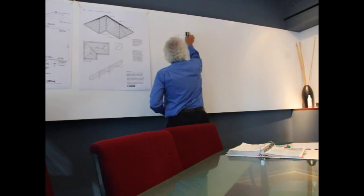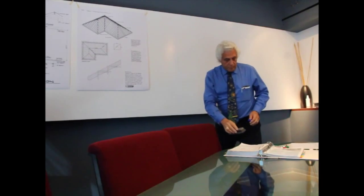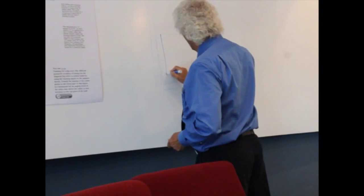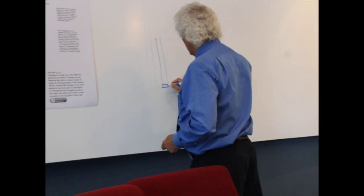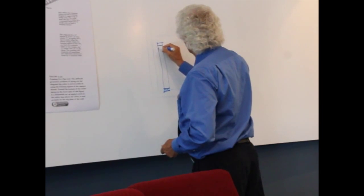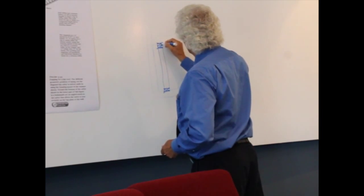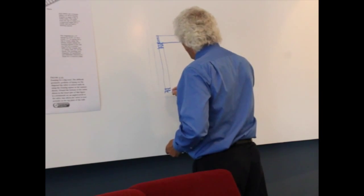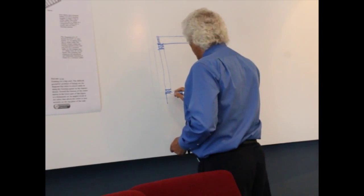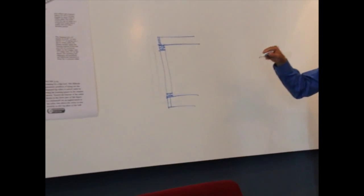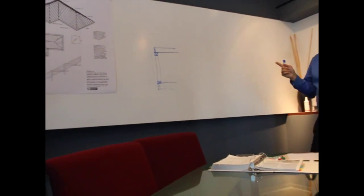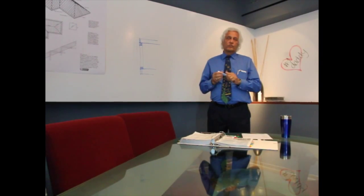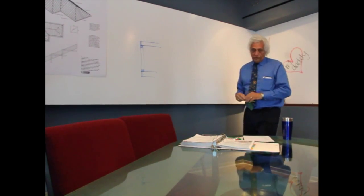Platform framing is simply where you build one floor on top of the other. You have your first floor studs, and then the second floor framing bears on top of the first, and you just keep building on top of that. This is quite common up to four stories — there are many four-story hotels and motels built around the country out of wood framing.